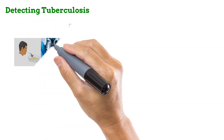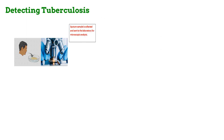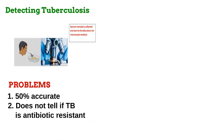That takes us to the Sputum Test. When a person tests positive to a skin or blood tuberculosis test, he or she can be sent for a sputum test to find out if it is an active or latent infection. Sputum is the thick fluid produced when a person coughs. It is collected and sent to a laboratory where it is analyzed through staining or culturing. While this method is still in use, especially in developing countries, it only has a sensitivity rate of 50%, meaning that half of the time it is wrong. Like the skin and blood tests, it also does not tell if the strain of tuberculosis present is antibiotic-resistant or not.